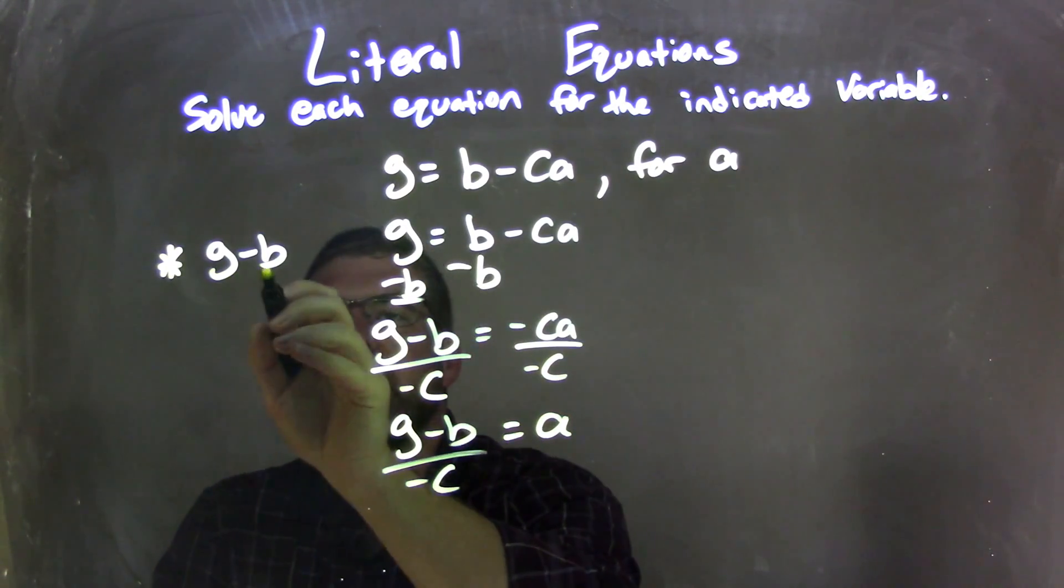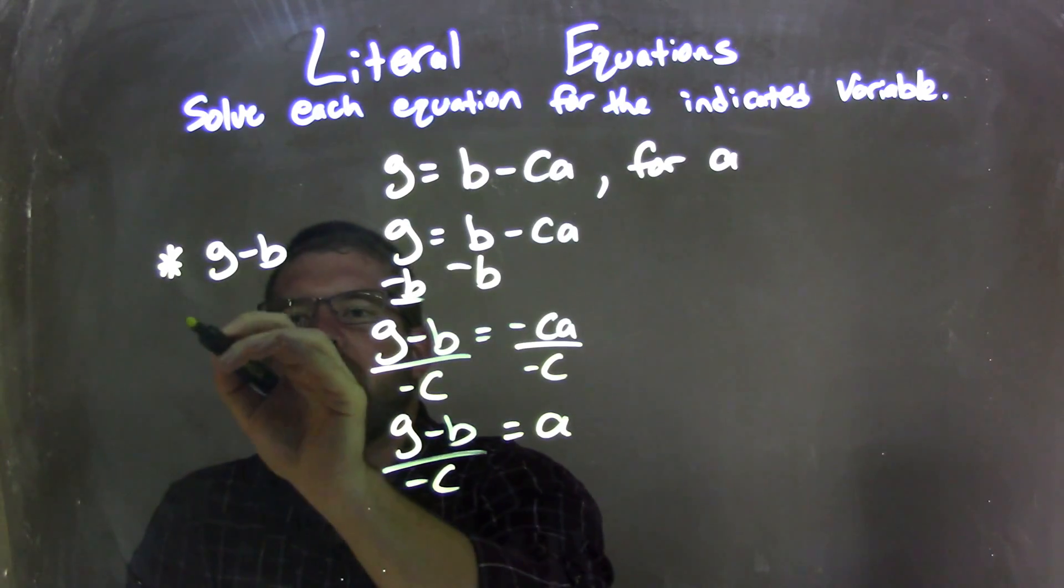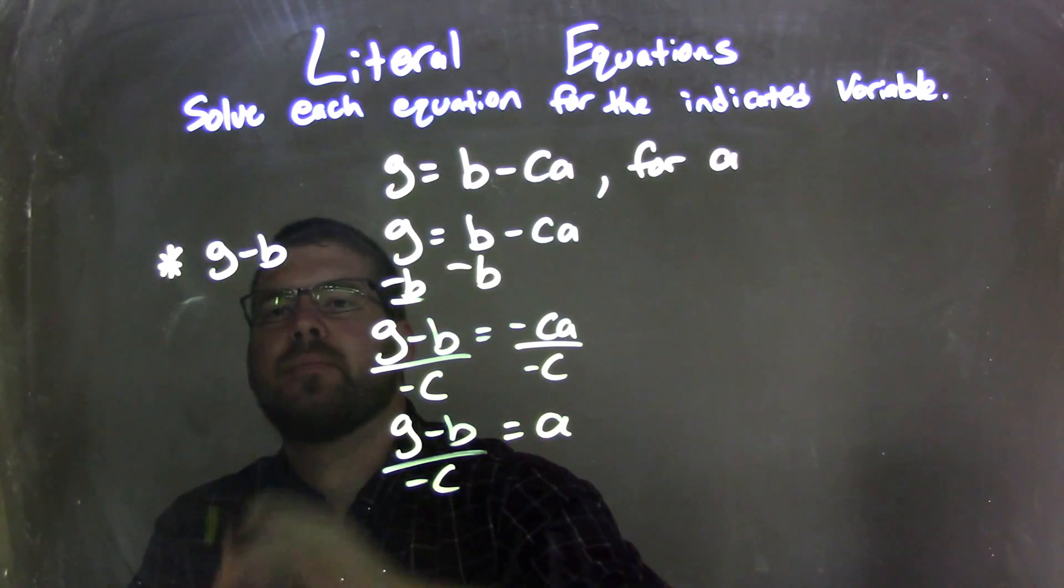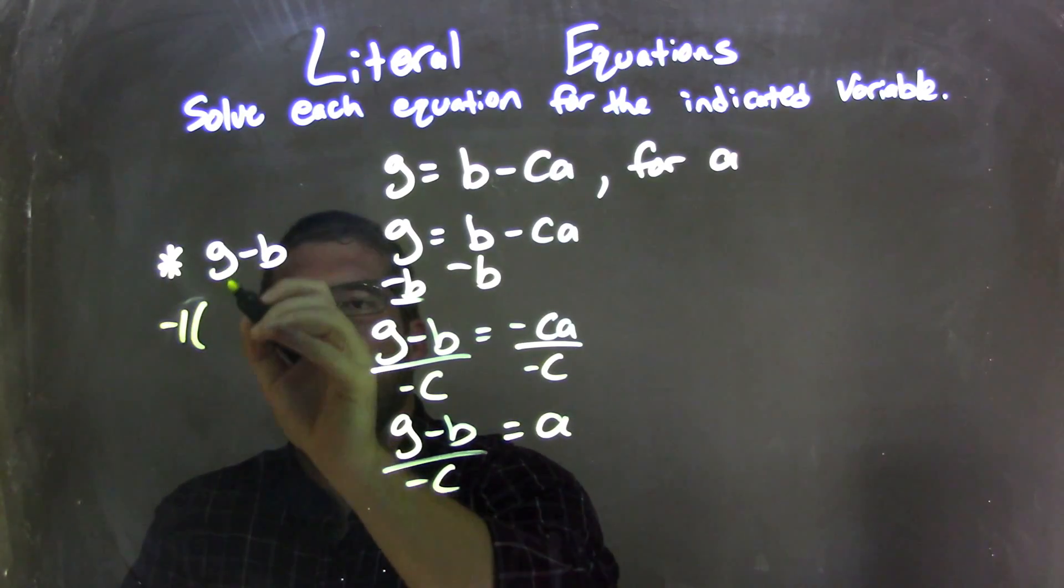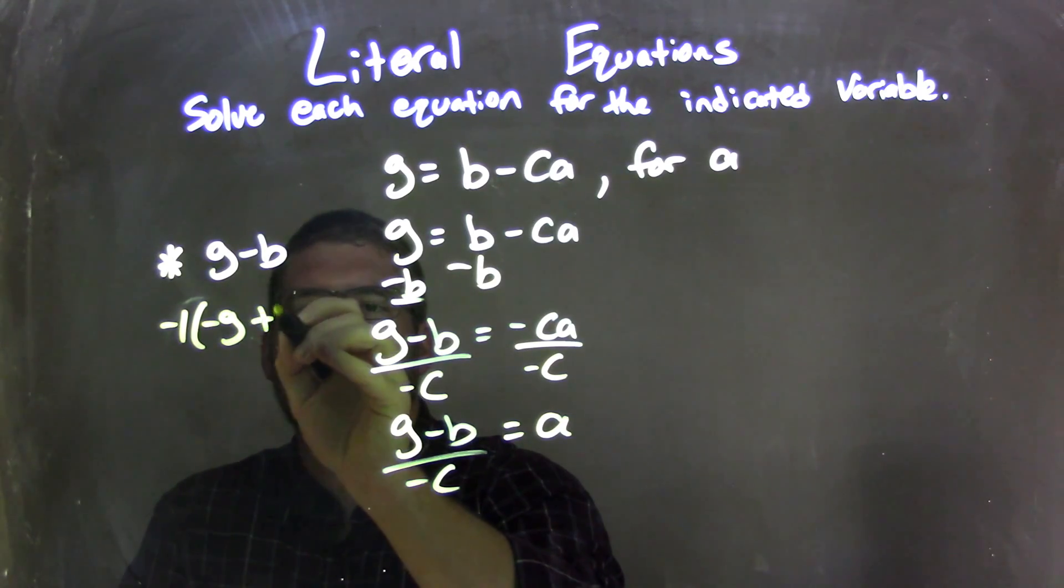So if I take G minus B, what would happen if I pulled out a negative? So I put a negative one on the outside of that. If I pulled out a negative, G becomes negative G, and then this becomes plus B.